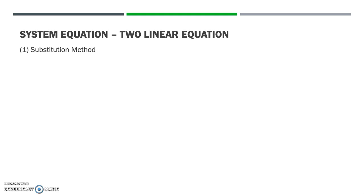First is substitution method. For example, we have these two equations. In substitution method, the first step is to solve one of the equations for y in terms of x or vice versa.